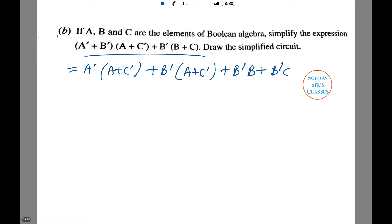For Boolean algebra, all you need to remember is the five or six laws. For example, idempotent laws and the other laws that are given, and you can solve the whole without causing any errors. And it's a sure shot answer. This equals A dash A plus A dash C dash plus B dash A plus B dash C dash plus B dash B plus B dash C.